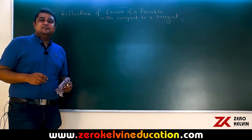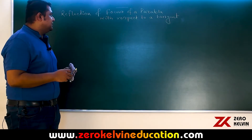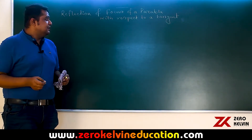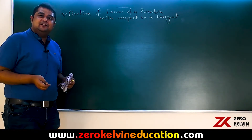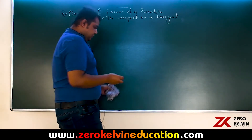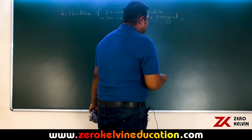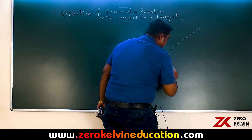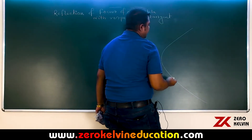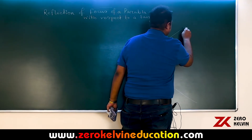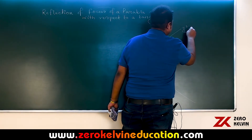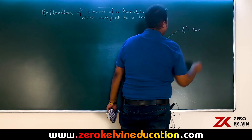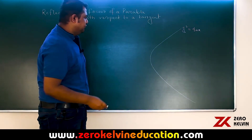In this particular session, we are going to discuss the reflection of the focus of a parabola with respect to any general tangent of a parabola. To perform so, let us firstly have a diagram. This is the parabola we are considering, and we are staying in our comfort zone by considering the parabola to be y² = 4x.